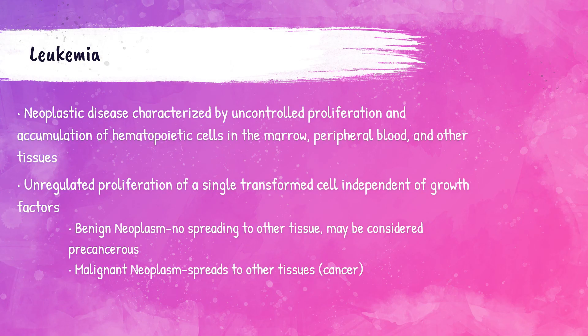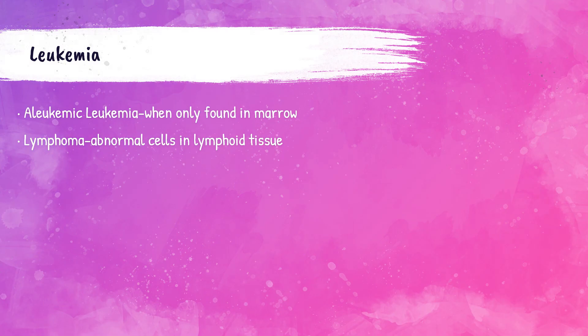This is an uncontrollable proliferation and accumulation of blood cells within the marrow, peripheral blood, and/or other tissues — an unregulated proliferation independent of growth factors. There can be benign neoplasms, meaning no spreading to other tissues, which may be considered precancerous, or malignant neoplasms, meaning it spreads to other tissues and is considered cancerous. The term aleukemic leukemia is when the abnormality is only present within the bone marrow, not the peripheral bloodstream. Lymphoma is when abnormal cells are present within lymphoid tissue, like the thymus or lymph nodes.